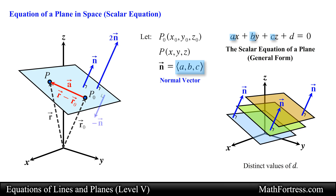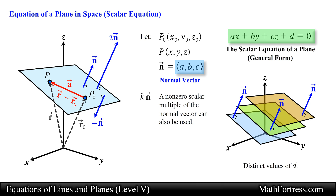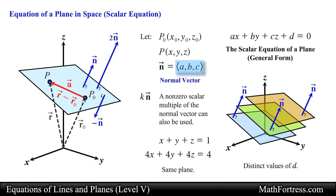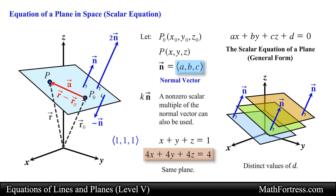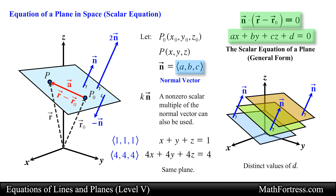We can also choose any non-zero scalar multiple of the normal vector to describe the plane. In that case the resulting scalar equation of the plane will also be multiplied by the scalar multiple. For example, two equations that define the same plane: the first uses the normal vector with components 1, 1, 1 and the second uses components 4, 4, 4. So keep in mind that the vector and scalar equation of a plane are not unique.